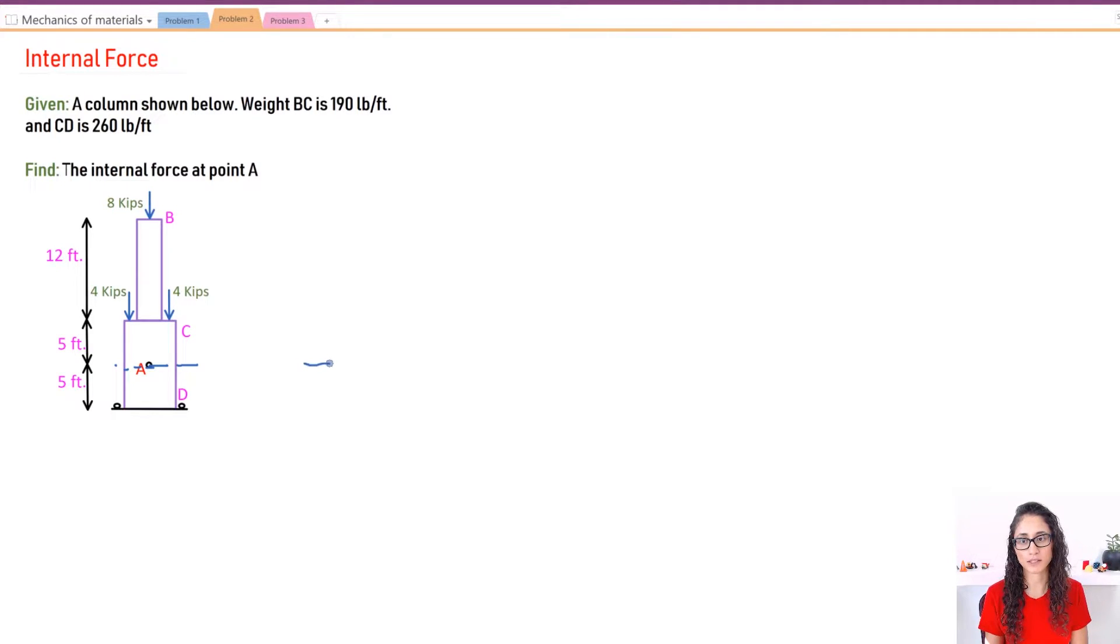Okay guys, so let's first draw our free body diagram. So let's say this is point A, right? And then I have, this is my first column. This is my column CB. Right? I have my force here, four kips. Here I have four kips. I have eight kips here.